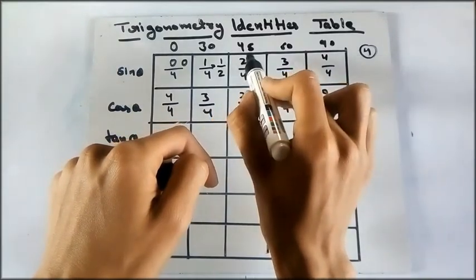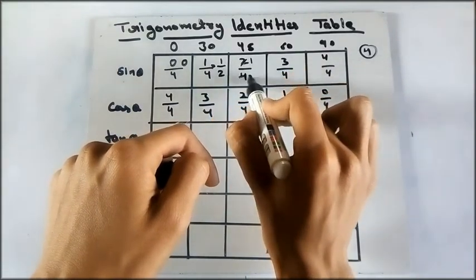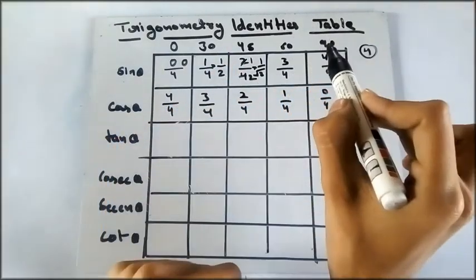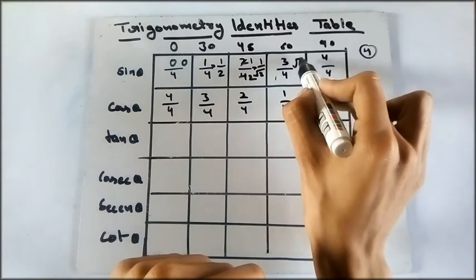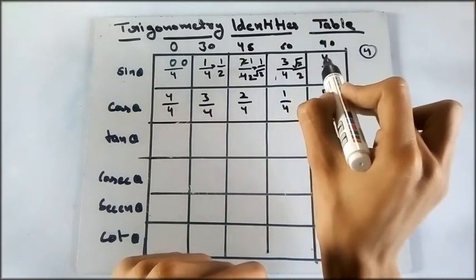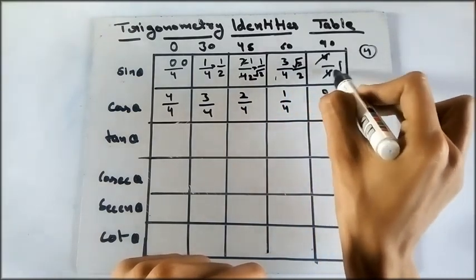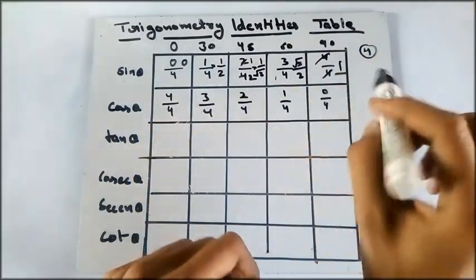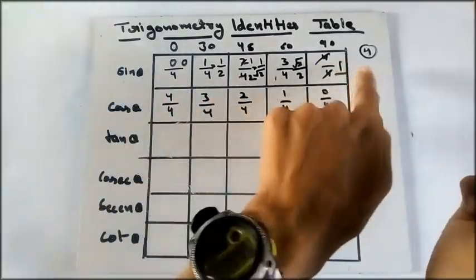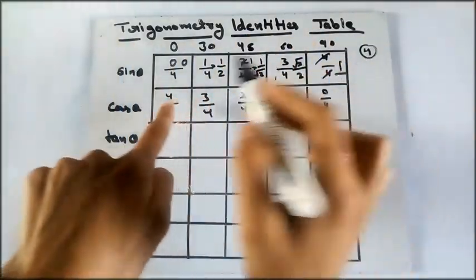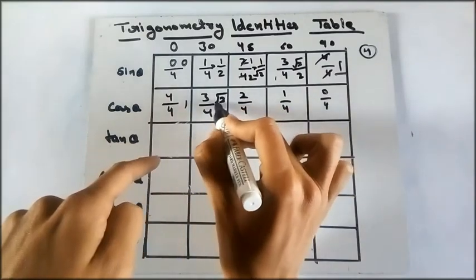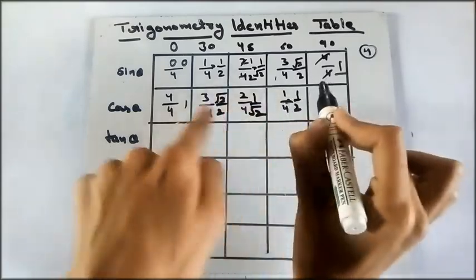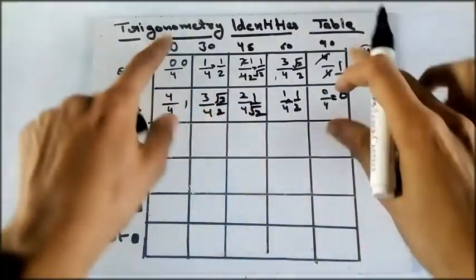Now taking root and solving it, that is 1 upon 2, and if you take the root that is 1 upon root 2. You got the value of this one. Now take the root of this, that is root 3 upon 2. Now if you cancel this, this is 1, and root 1 is 1. So you got the value of sine x. Now you can either solve this one or write reverse of this: that is here 1, here root 3 by 2, here 1 by root 2, here 1 by 2, and here 0. You got the value of this.